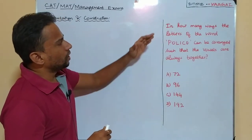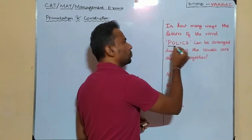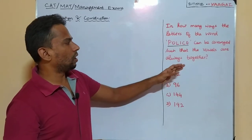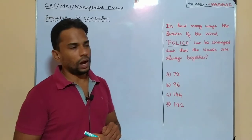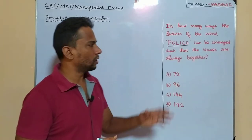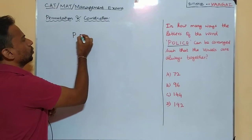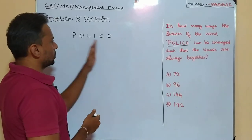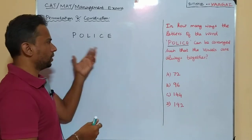Our question here is: in how many ways can the letters of the word POLICE be rearranged such that the vowels are always together? The given word is POLICE — P-O-L-I-C-E. This is a six-letter word and all the letters are distinct, with no repetition.